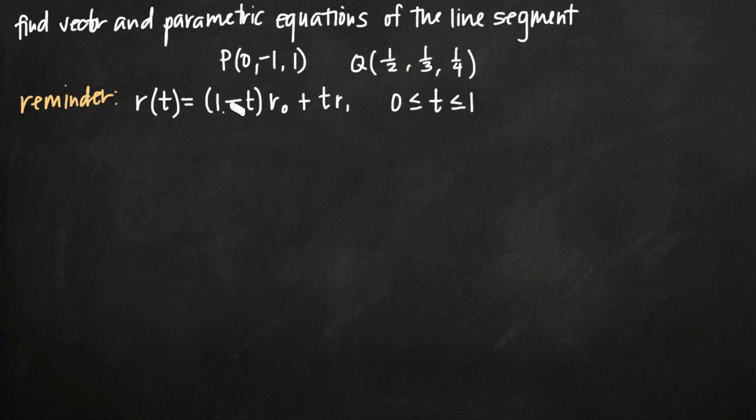So what do we need to do? Well, we need to call our coordinate points r₀ and r₁. So we'll say r₀ is going to be <0,-1,1>. We've just turned it into vector form where the initial point of this vector is at the origin, and the terminal point of the vector is at our coordinate point P, and we call that the vector r₀. We're going to say the vector that starts at the origin and goes out to the point Q is the vector r₁.